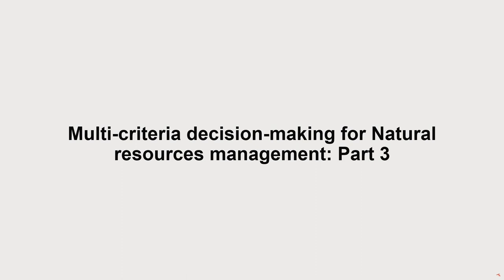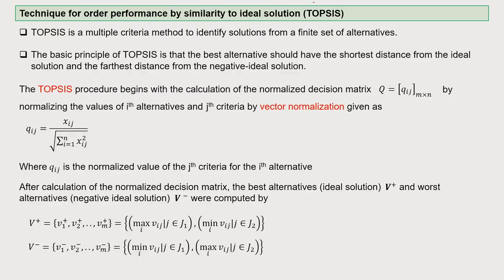Dear participants, continuing our discussion on multi-criteria decision making for natural resource management in part 3. We will discuss the technique for order performance by similarity to ideal solutions, known in brief as TOPSIS. If you recall the introductory lecture of MCDA, I mentioned a couple of techniques and TOPSIS is one of them. The full form is 'Technique for Order Performance by Similarity to Ideal Solution' — a little long name, but TOPSIS is easy to remember.